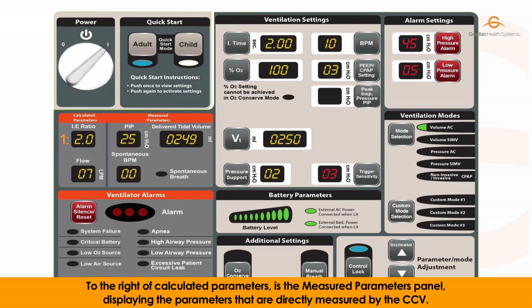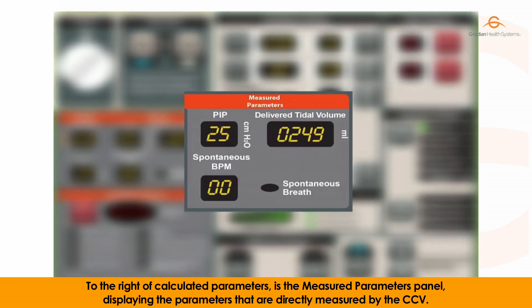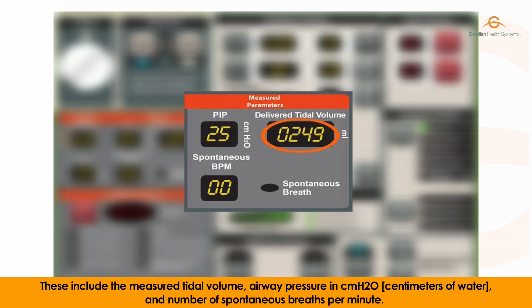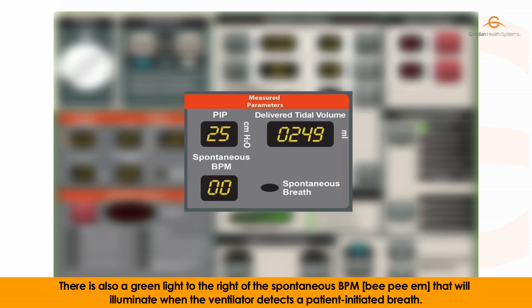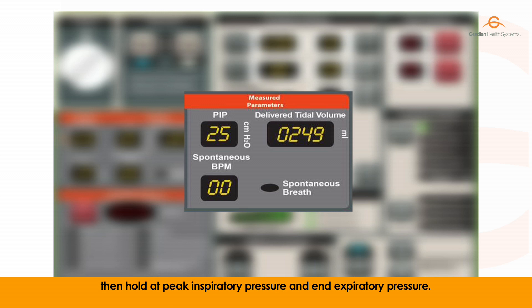To the right of the calculated parameters is the measured parameters panel, displaying the parameters that are directly measured by the CCV. These include the measured tidal volume, airway pressure in centimeters of water, and number of spontaneous breaths per minute. There is also a green light to the right of the spontaneous BPM that will illuminate when the ventilator detects a patient-initiated breath. As the airway pressure measurement changes throughout the breath cycle, the CCV will display the pressure as it varies, then hold at peak inspiratory pressure and end expiratory pressure.